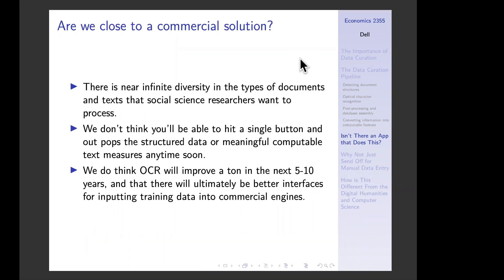I don't think we are close to a commercial solution where you hit a button and out pops your structured data or meaningful computable text anytime soon. I do think OCR is going to improve a lot in the next five to ten years because there's potential for data augmentation — imagine you could simulate documents at scale and you'd have the labels already. But this doesn't obviate the need to understand these methods and to be able to fine-tune them yourself if you want to curate data at scale.